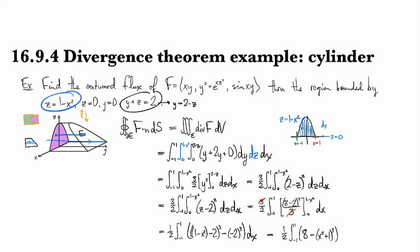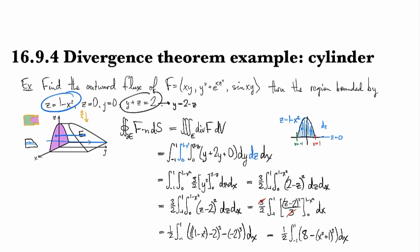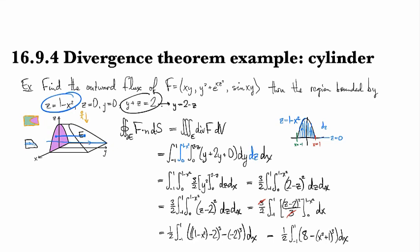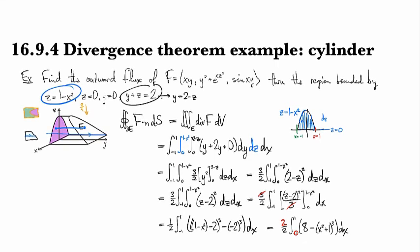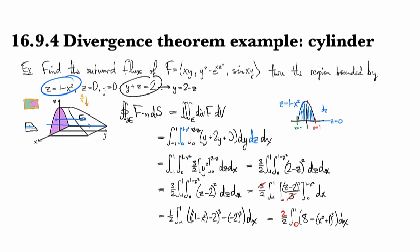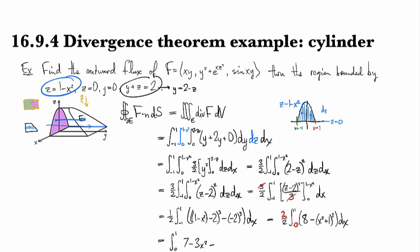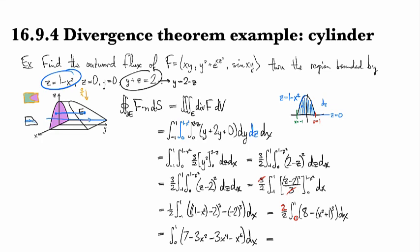This is an even function because all powers of x appear squared, so we can use a symmetry trick and make this 2 times the integral from 0 to 1. We'll have to multiply the expression out — that gives 7 minus 3x squared minus 3x to the 4th minus x to the 6th. Some algebra done on scratch paper — no need to bore you with that.